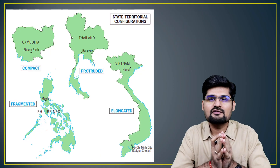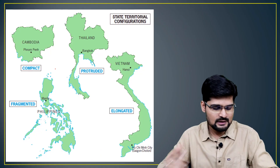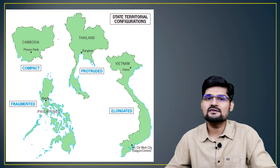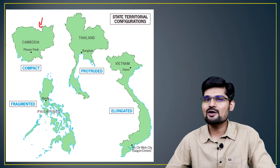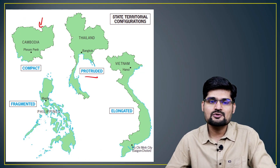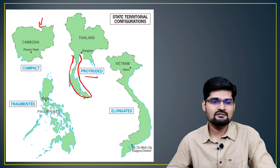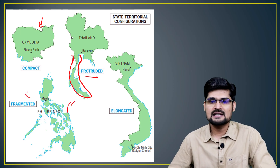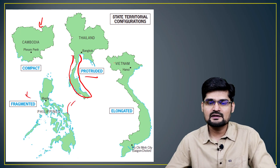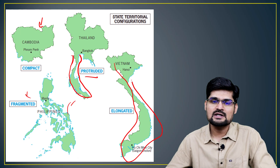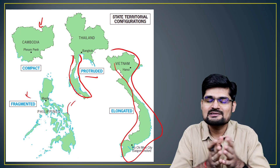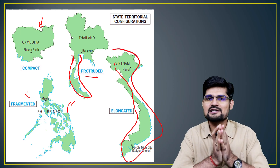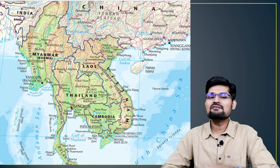The shapes of these countries are very unique physiographically. Cambodia is a compact shape. Thailand is protruded — you can see this protrusion, the Isthmus. The Philippines islands are fragmented, and Vietnam is elongated from north to south. Very interesting and unique country shapes are found in this region, along with the core Indochina belt.